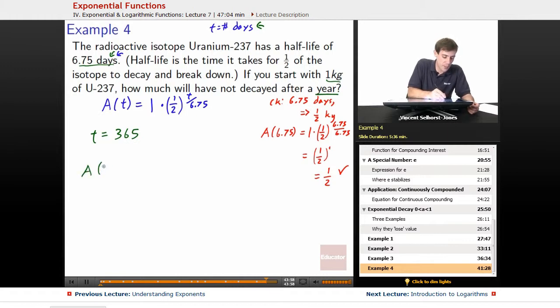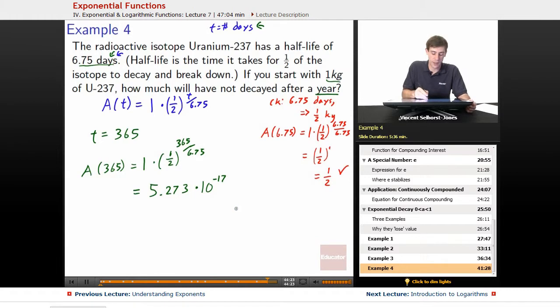So at the end of that, we plug in 365 equals one, the amount that we started with times the half life will occur every 6.75 days. And we're having 365 days go in. We plug that all into a calculator and we get the amazing number, amazingly tiny number of 5.273 times 10 to the negative 17th kilograms. Really, really, really small number. To appreciate how small that is, let's try to expand it a bit more.